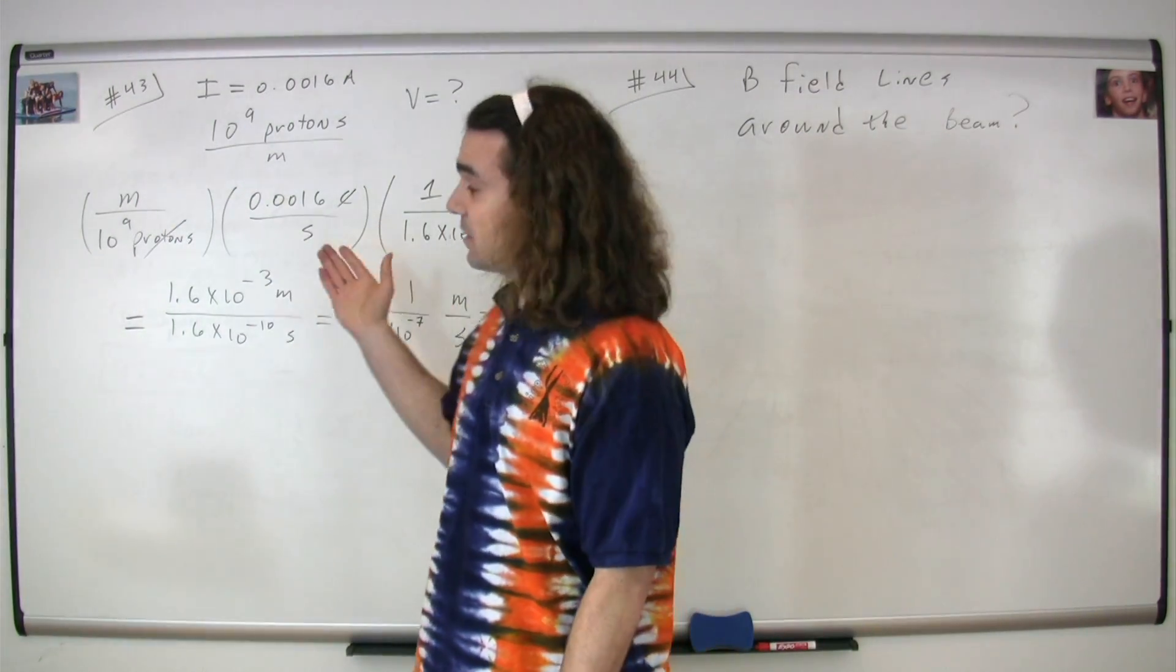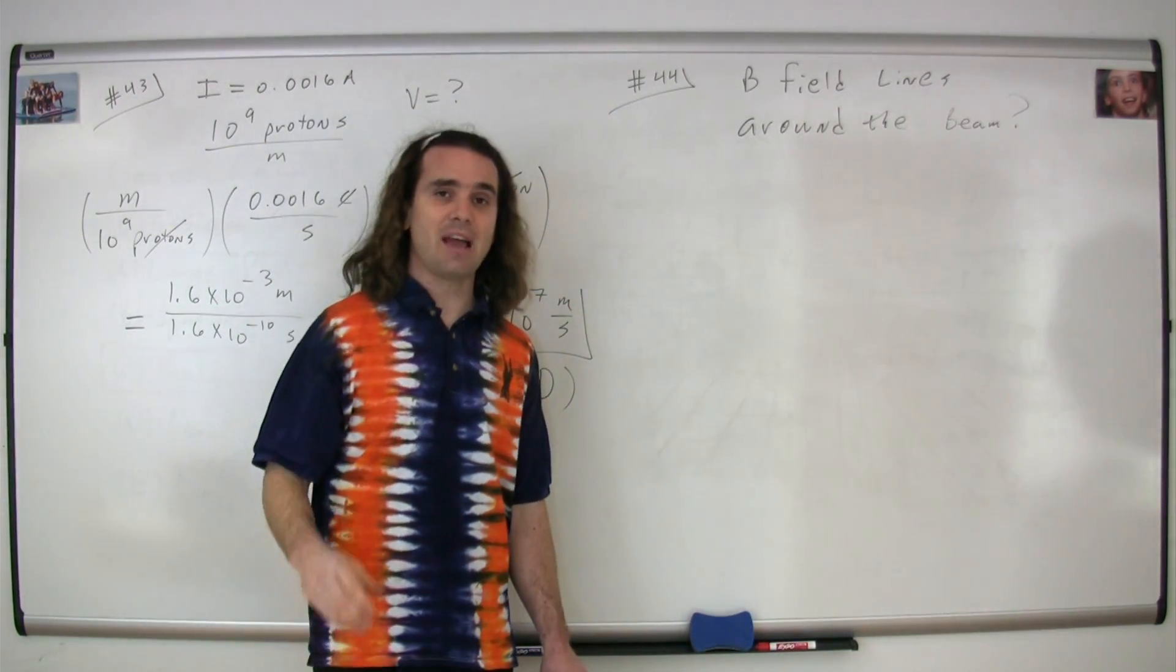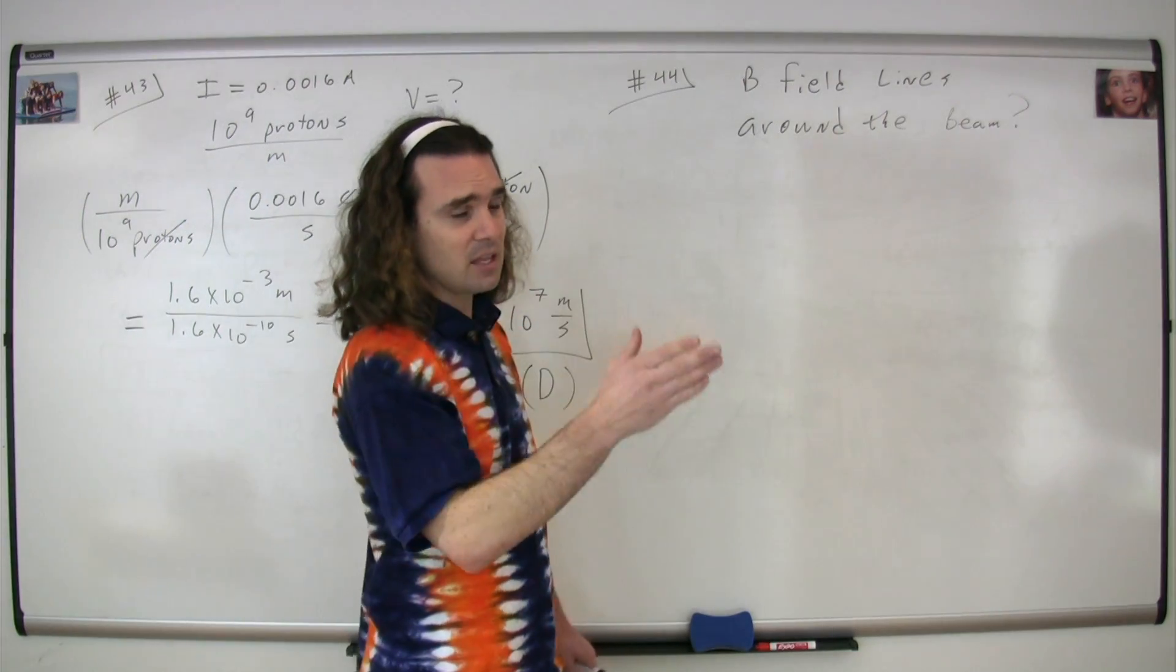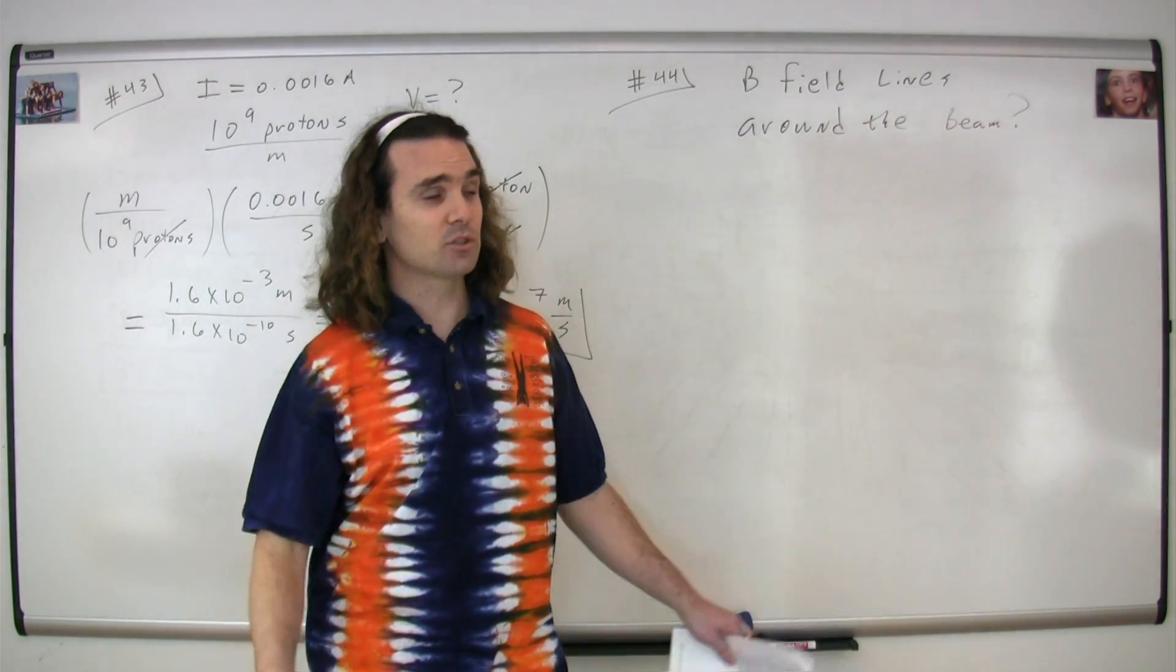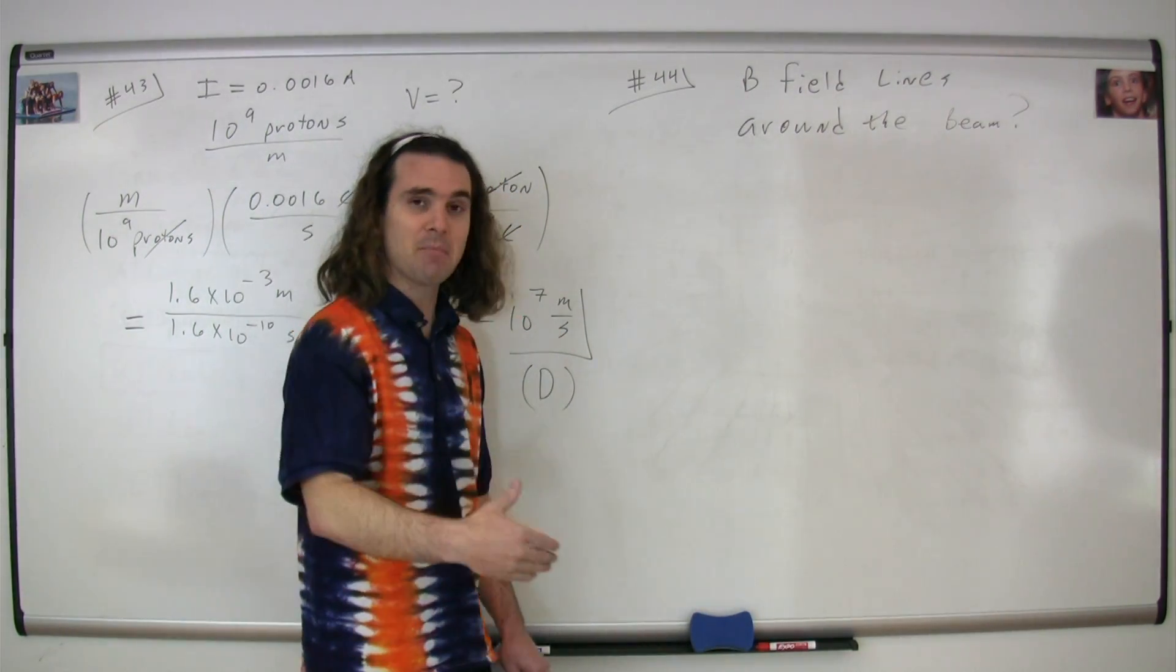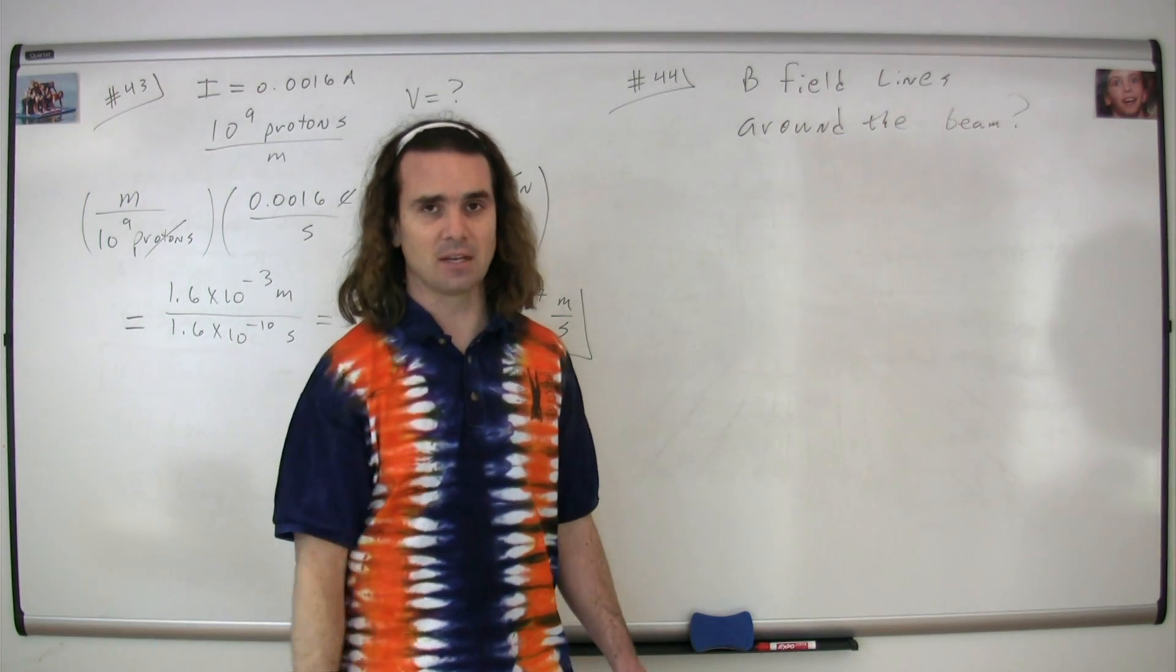Question number 44 is an extension of question number 43. We still have this beam of protons moving in a straight line creating a current. And we're trying to figure out the magnetic field, the shape of the magnetic field around this beam of protons.